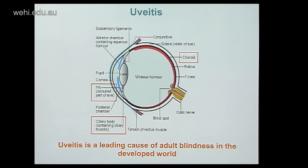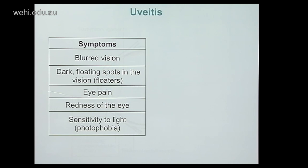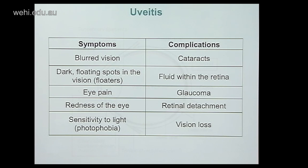Uveitis specifically refers to inflammation of the uvea, which is the middle layer of the eye, comprising the choroid, the iris, and the ciliary body. Apart from diabetes, it is the most common cause of adult blindness in the developed world. Symptoms include blurred vision, eye pain, and photophobia. Complications can include cataracts, fluid within the retina, retinal detachment, and most seriously, vision loss.